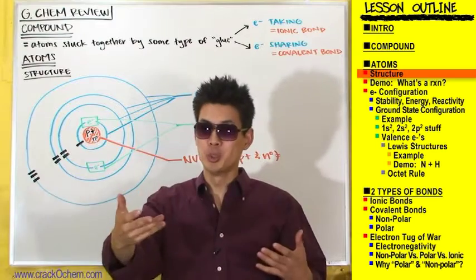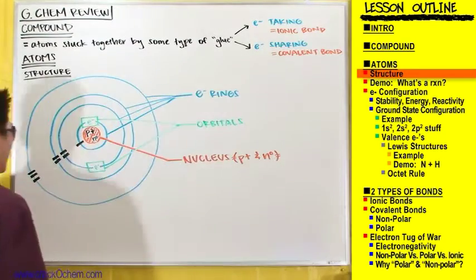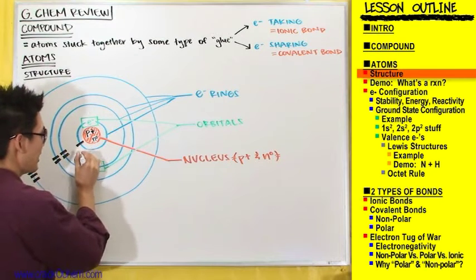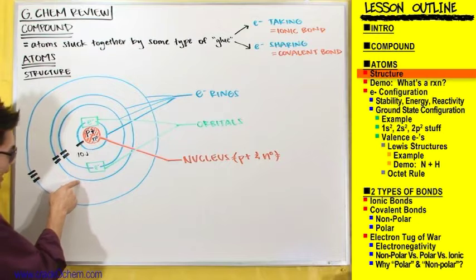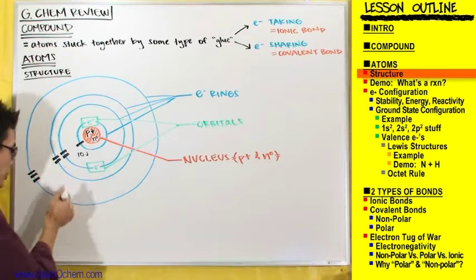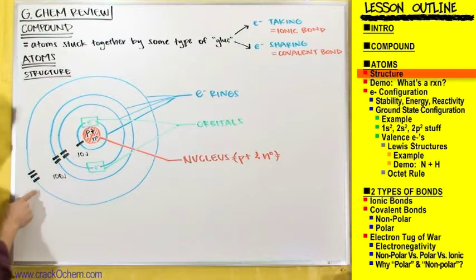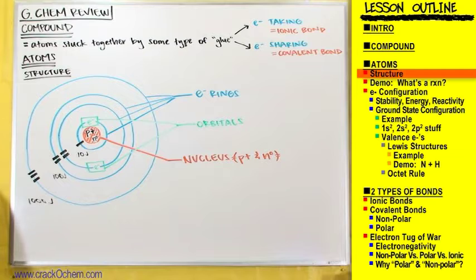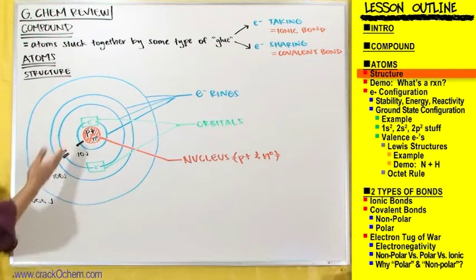Energy is normally expressed as joules. For example, let's say this first electron ring has about 10 joules of energy, and the next two electron rings are both about 100 joules each. Then once you get to this outer electron ring, let's say that one is about 1,000 joules. These are made-up numbers just to show the concept — they aren't exact.